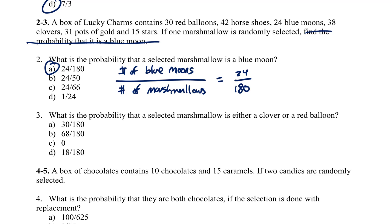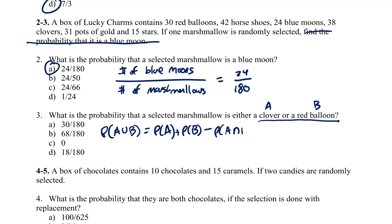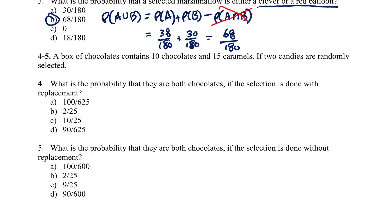For number 3, we want the probability of selecting either a clover or a red balloon. For an 'or' statement — P(A union B) — we use the addition rule: P(A) + P(B) minus P(A intersection B). In this case there's no intersection, since something can't be both a clover and a red balloon. So we add 38/180 clovers plus 30/180 red balloons, giving 68 out of 180.